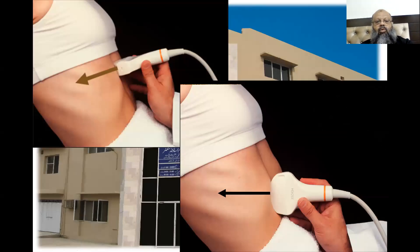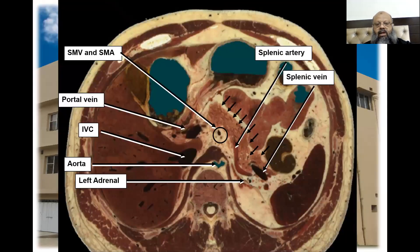If we are still unable to scan the patient even after giving water, we can ask the patient to take a semi-sitting position with their arms behind their back. In this position, we can get rid of the gases that are obscuring the visualization of the pancreas.